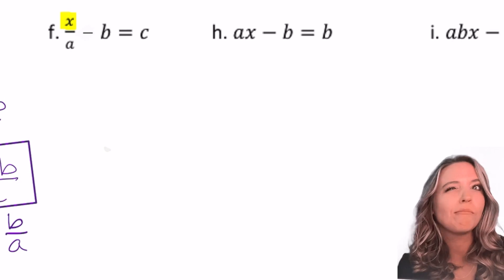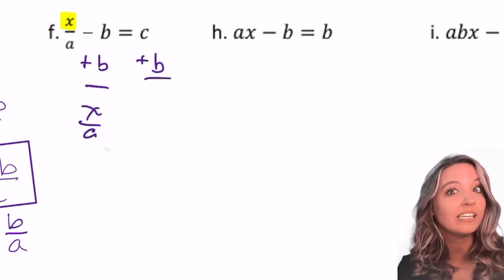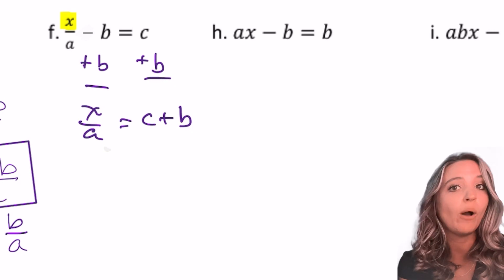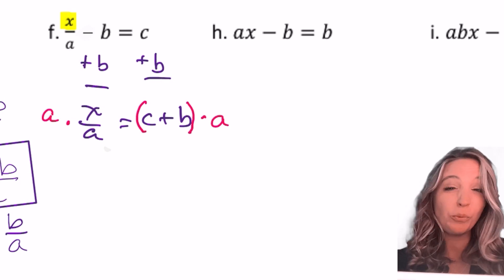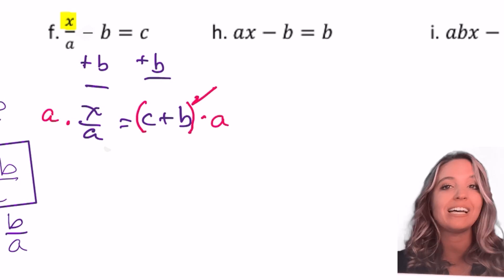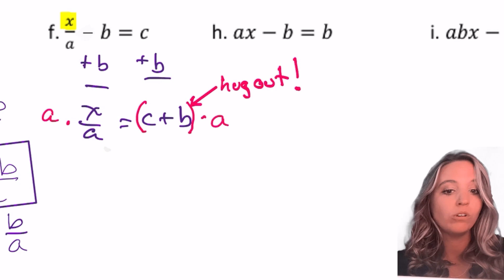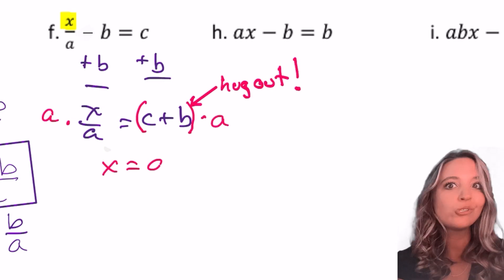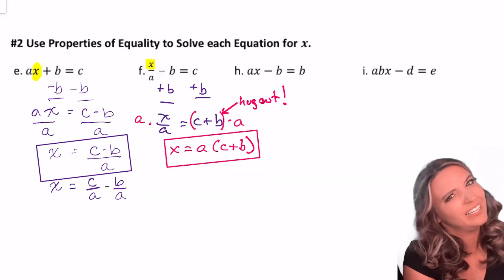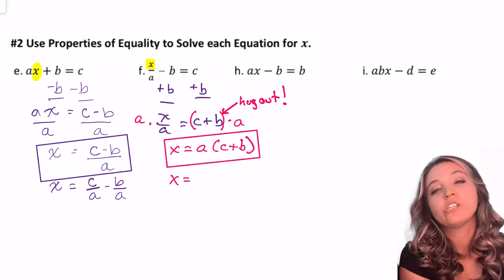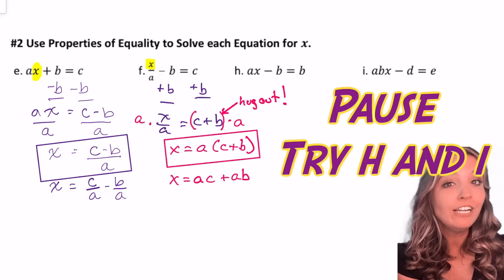Let's try another one. I want to get x by itself again, but this time I have minus b, so I need to add b to both sides. That leaves me with x divided by a equals c plus b. Now let's undo that division and multiply by a. Be really careful here — I need to put parentheses around c plus b so that everything gets multiplied by a. x equals c plus b times a, or using the commutative property, a times (c plus b). I could also use the distributive property and distribute a to both c and b. Pause the video and try h and i.